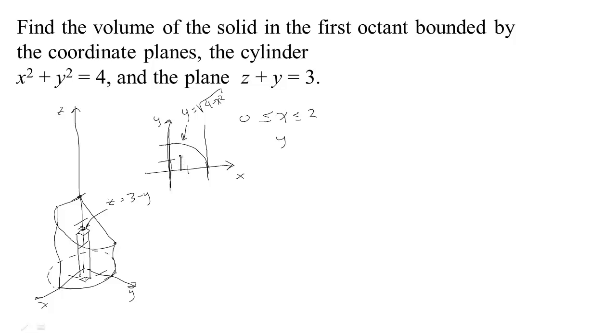So for each x value, our y value is going to start at 0 and climb until it reaches this upper bound, which is the circle, square root of 4 minus x squared. That gives me bounds on my integral, so I can just set up my integral and do it.